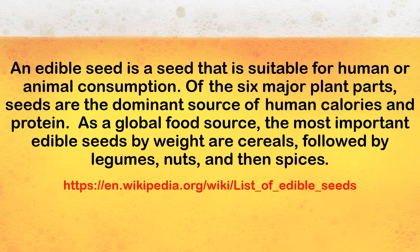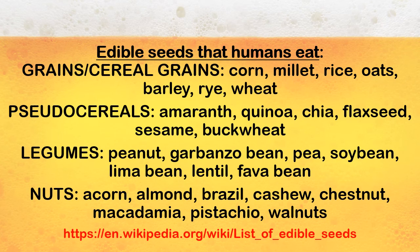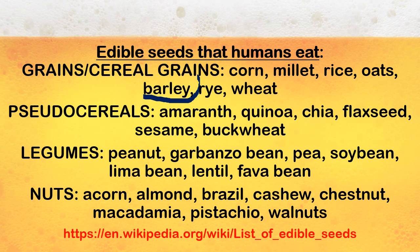Edible seeds are good for humans. Of the six major plant parts, seeds are the dominant food source globally. Cereals, legumes, nuts, and spices all come from seeds. That includes grains like corn, rice, oats, barley, and wheat; pseudo-cereals like quinoa, flaxseed, and sesame; legumes like peanuts, garbanzo beans, soybeans, and lima beans; and nuts like acorns, almonds, Brazil nuts, and cashews. We are going to focus on barley when we start talking about malting and fermentation.